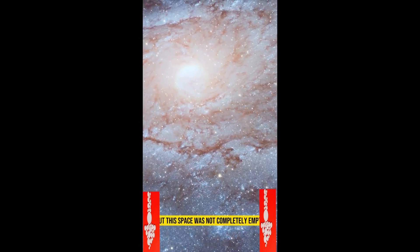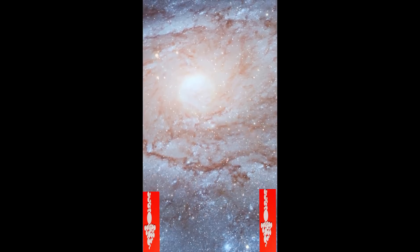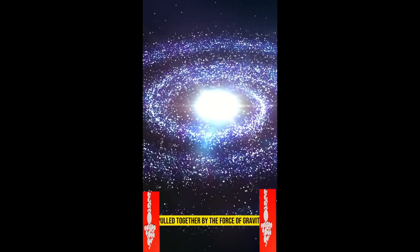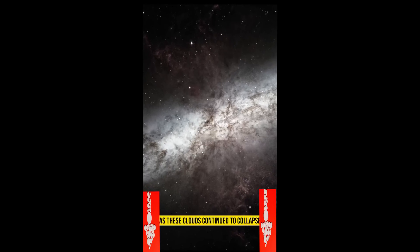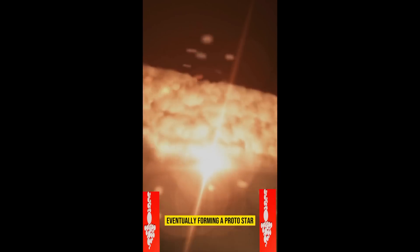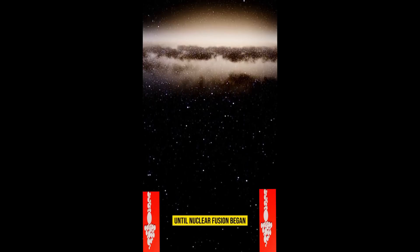But this space was not completely empty. Over time, clouds of gas and dust began to form, pulled together by the force of gravity. As these clouds continued to collapse, they grew hotter and denser, eventually forming a protostar. The protostar continued to collapse, and its core grew hotter and hotter until nuclear fusion began.